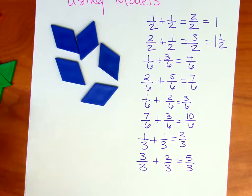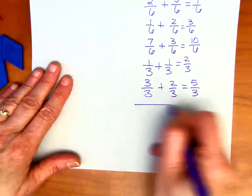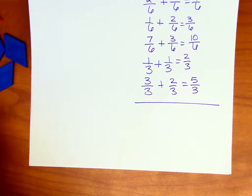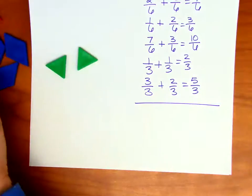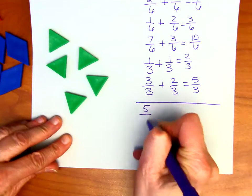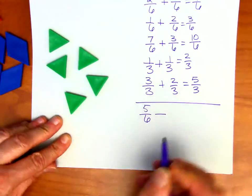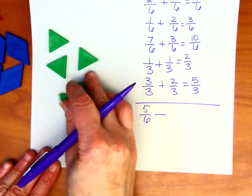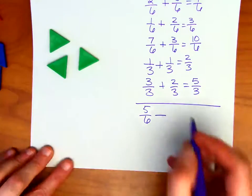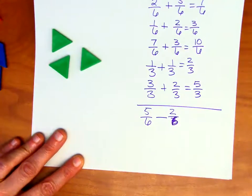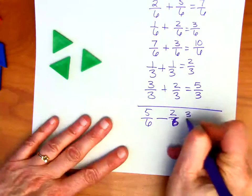Now we can keep going with addition, but let's go ahead and do some subtraction problems. Let's go back to sixths. Let's say we have five of those sixths — there's five-sixths. And we're going to take away two-sixths. So instead of adding on, I'm just going to take two and move them off the paper. How many are left on that paper? Looks like three — three-sixths.